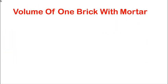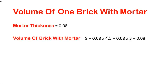Now, volume of one brick with mortar. Mortar thickness is 0.08 inches. Volume of brick with mortar: 9 plus 0.08 times 4.5 plus 0.08 times 3 plus 0.08. We add the mortar thickness to all dimensions because this is volume of brick with mortar.